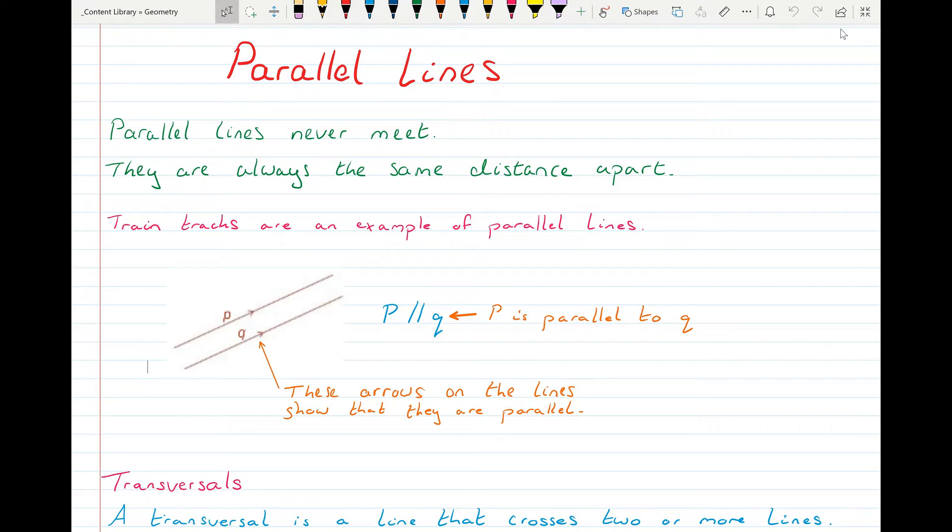When they're drawn, these little arrows here represent that the line P and the line Q are parallel to one another. And when we're writing it out, we can say that P is parallel to Q. So that symbol there of two parallel lines says that they're parallel.